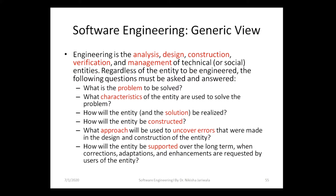Questions arise and are answered through software engineering phases. For example, the first question is: what is the problem to be solved? Second: what characteristics of the entity are used to solve the problem? We have to focus on those characteristics to solve the problem. Third: how will the entity be realized? The solution will be reported in terms of output and result.